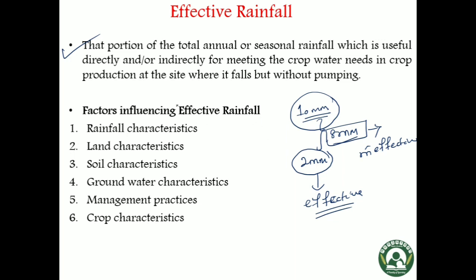Effective rainfall is the portion of rainfall which actually meets the crop water requirement. These are the factors which affect effective rainfall. The first one is rainfall characteristics. For example, if a huge amount of rainfall occurs in a very short time period, meaning rainfall intensity is very high, then much of the rainwater will be lost through runoff or percolated deep into the soil. So much of the rainfall is ineffective if rainfall intensity is high.